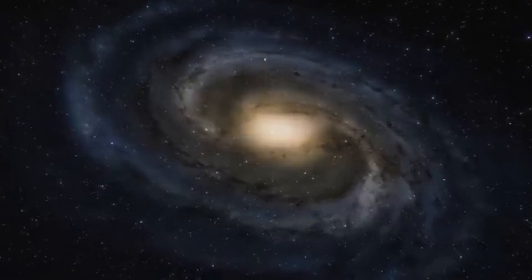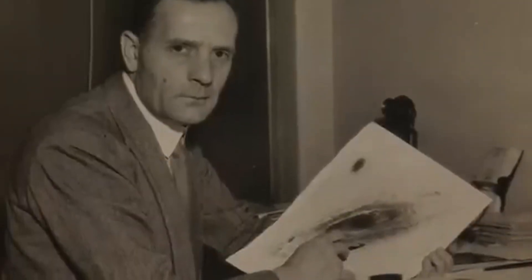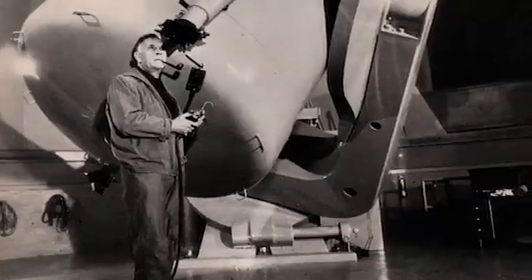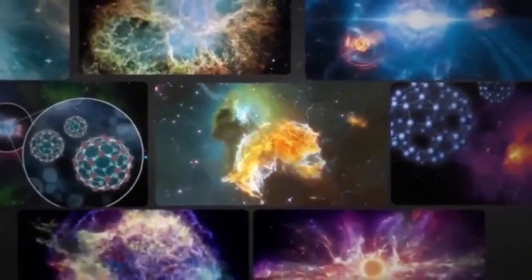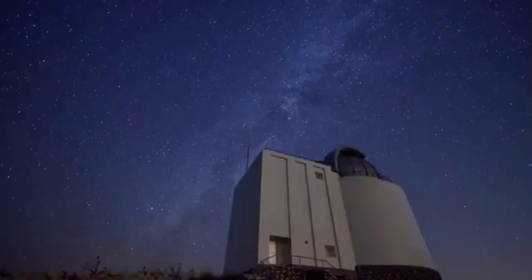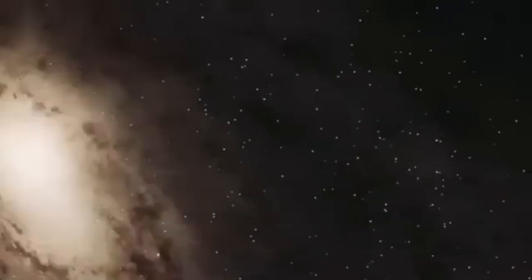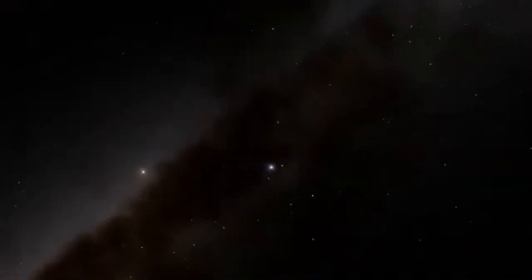In our own solar system, for instance, the distance between celestial bodies is vast. The Earth is about 140 million miles away from Mars and approximately 93 million miles from the Sun. The distance between our Sun and the nearest star, Proxima Centauri, is about 25 trillion miles. Given these immense distances, the collision between Andromeda and the Milky Way will likely result in little to no direct collisions between stars and planets.